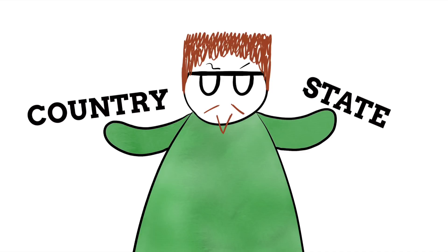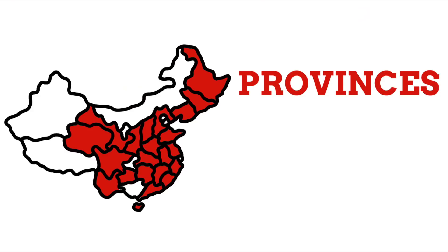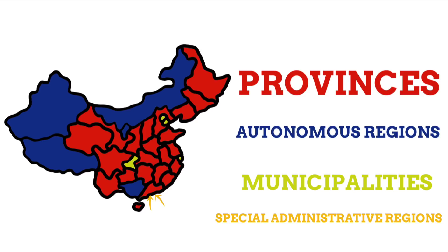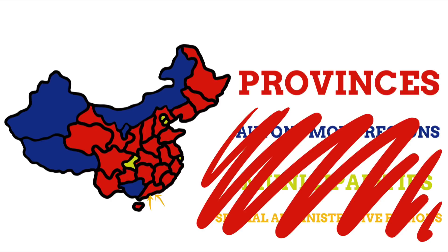China's subdivisions actually have a selection of names. While the majority of them are called provinces, some are called autonomous regions, some are called municipalities, and two in particular are called special administrative regions. These different titles imply different things, such as the amount of self-governance they have and what's actually within them. Though despite this, it seems socially acceptable to refer to them all as provinces — hence why I've called them all provinces in the title of this video. I just know if I didn't mention these different titles, someone in the comments would have.